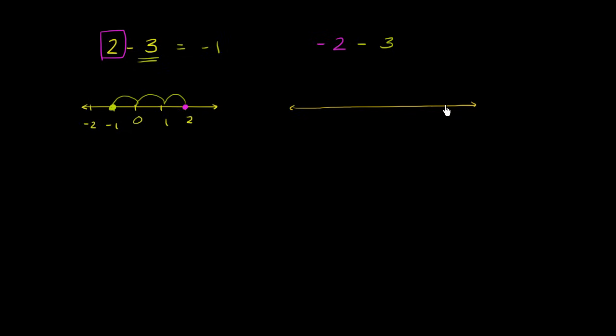And I'll put 0 over here. So this is 0, this is 1. This is negative 1, negative 2, negative 3, negative 4, negative 5, negative 6. And I could keep going.